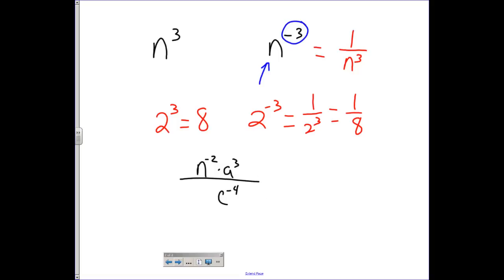But usually we want to get rid of the negatives. We don't want that to be a negative exponent. Well the quickest way to undo that is to change the position. So if n to the negative 2 is in the numerator here, its reciprocal means n to the positive 2 will be in the denominator of the same problem.